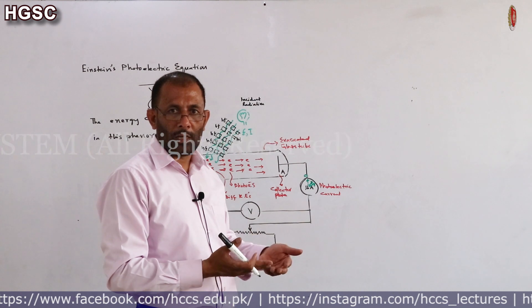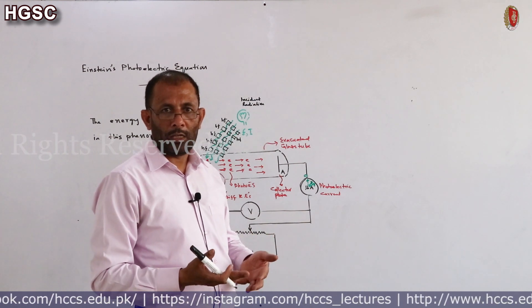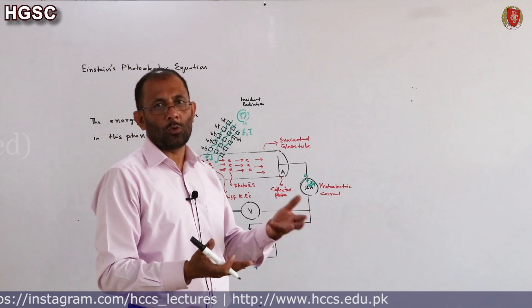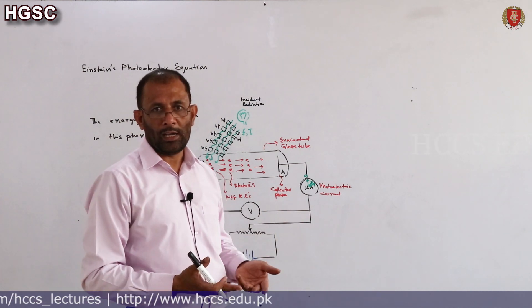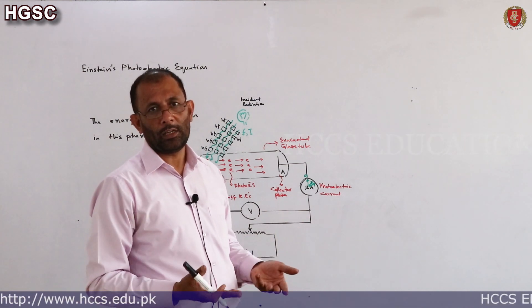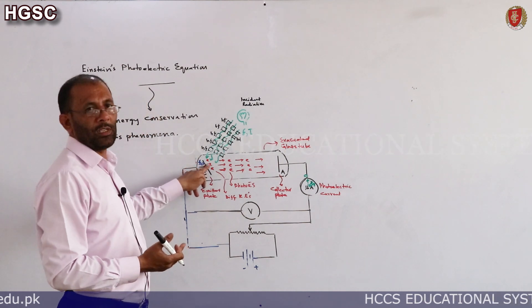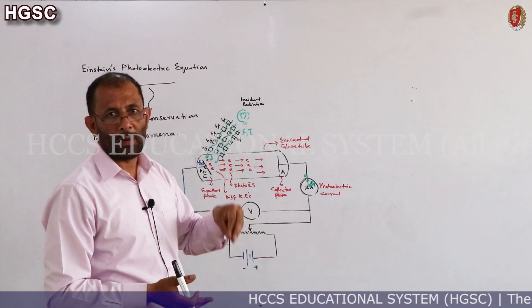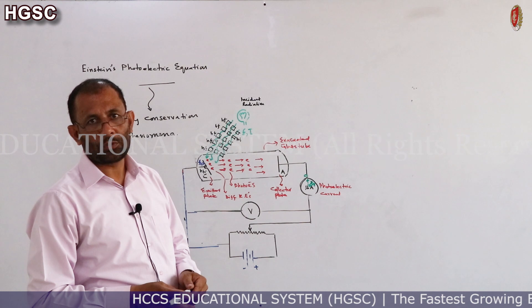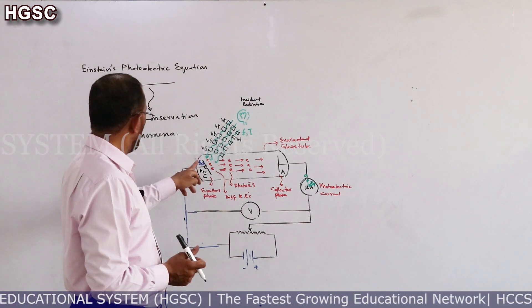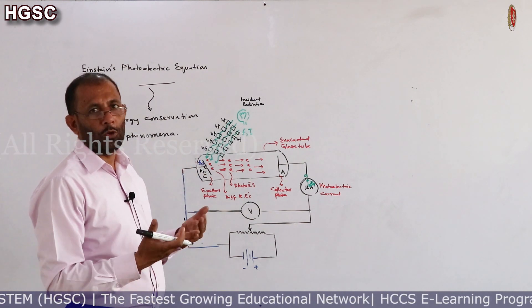This electron's kinetic energy will be maximum which comes out of the metal directly without suffering any collision with the atoms of the metal. Minimum energy will be zero.